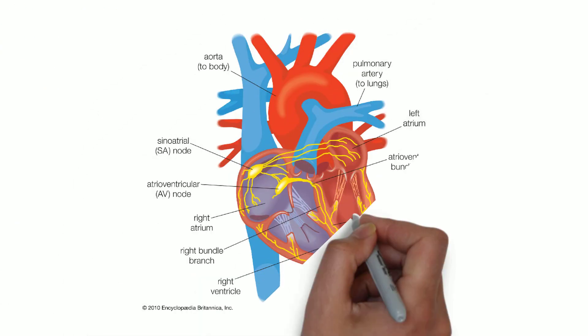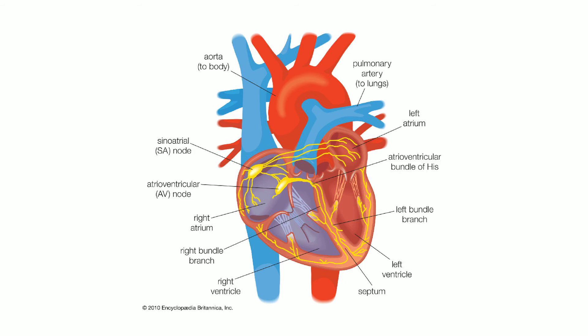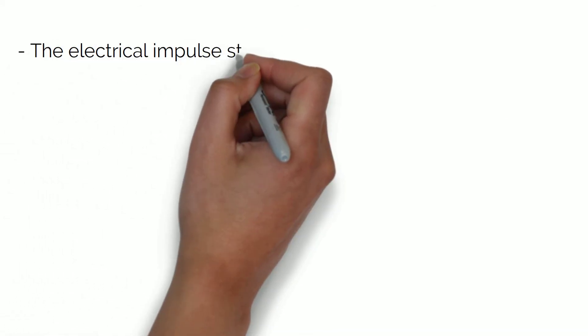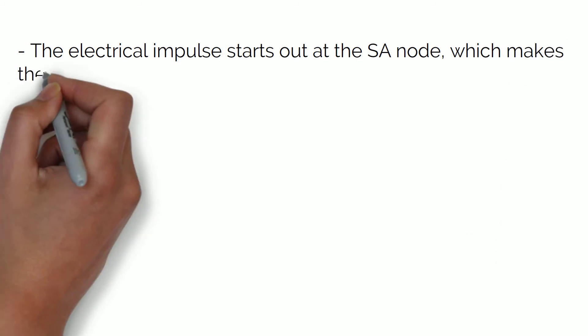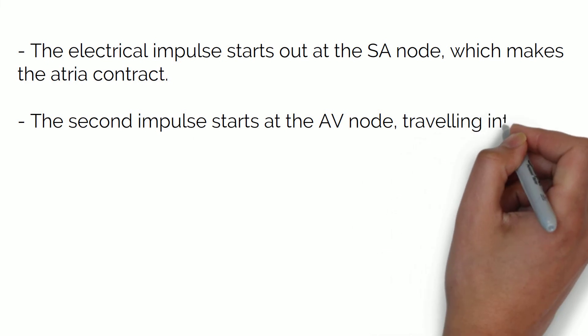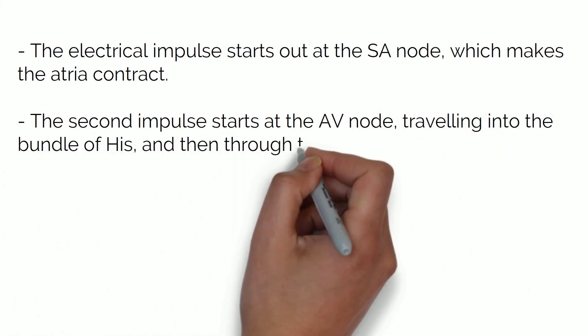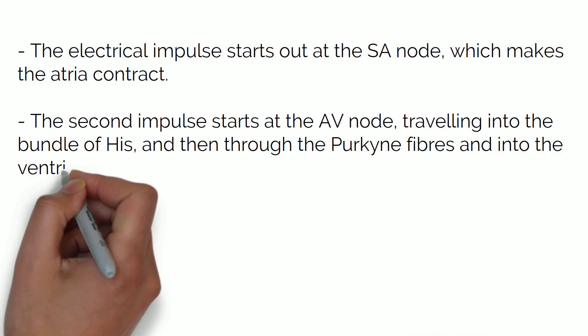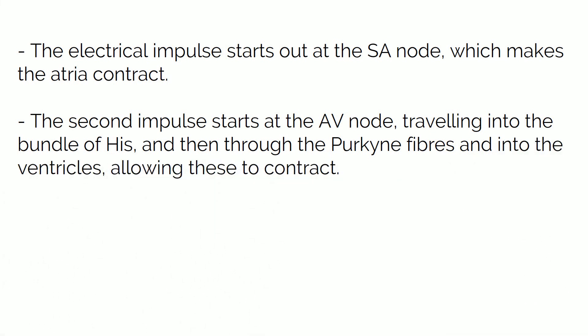Now let's talk about the electrical components of the heart. These are the sinoatrial node or SA node, the atrioventricular node or AV node, the bundle of HIS, and the Purkinje fibers. The SA node, located in the right atrium, generates an electrical stimulus which activates the atria to contract and let blood pass to the ventricles. The AV node then comes into action and sends a signal to the ventricles to contract, and then it goes back to the SA node for the atria to contract again, so the cycle restarts.